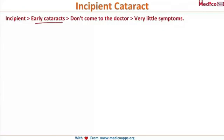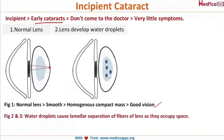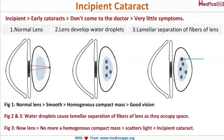Incipient is an early cataract. The patient doesn't know that he has a cataract because there are hardly any symptoms. The normal lens is very smooth and homogeneous with a compact mass. However, as the patient ages, water droplets start collecting within some of the fibers of the lens, causing lamellar separation of these fibers. As the water droplets occupy the space between the lens fibers, the lens is no more a homogeneous compact mass.